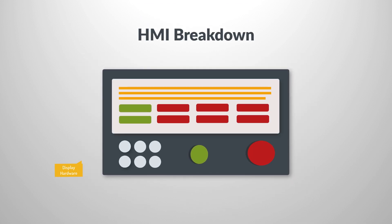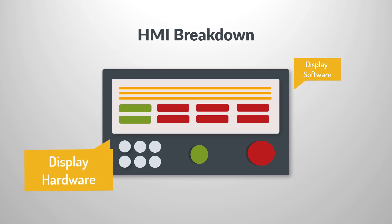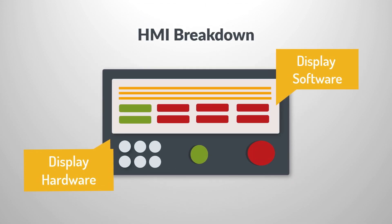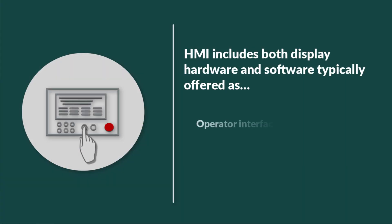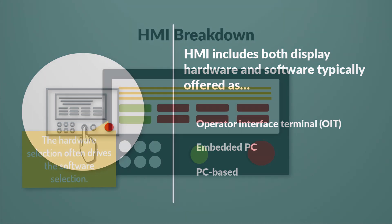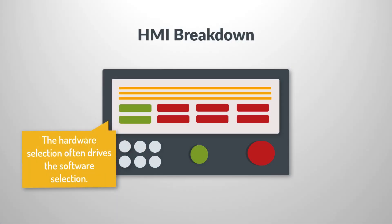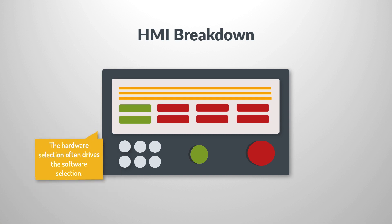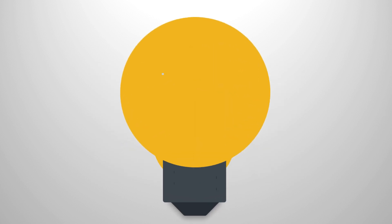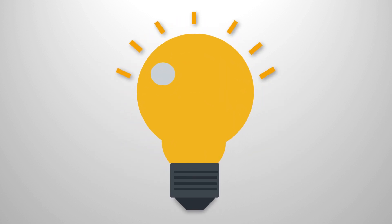An HMI includes both display hardware and software, typically offered by an operator interface terminal (OIT), embedded PC, or PC-based system. Often the hardware selection drives the software development platform used. It's not until the decision is made to go with a PC-based HMI that the HMI software possibilities open up.